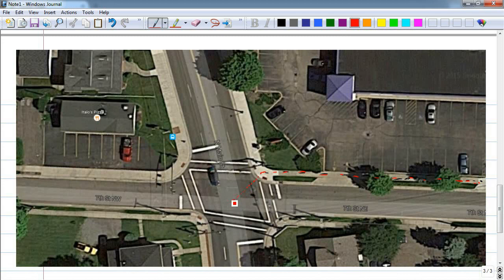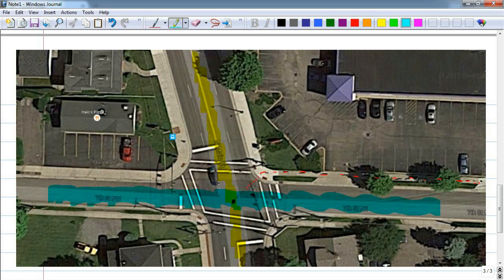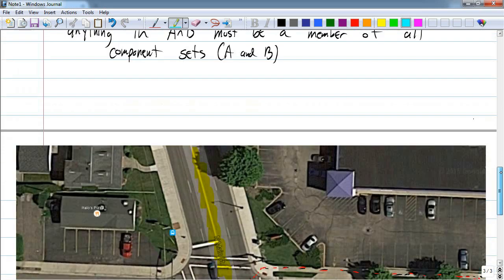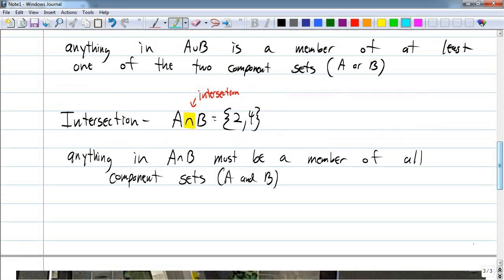But ask yourself, if you're right here in the intersection, which road are you on? Are you on Main Street, which runs this way, or are you on 7th, which runs this way? The answer is you're on both, because you're in the intersection of these two streets. It's the same idea with sets—if it's in the intersection, it's got to be in both.